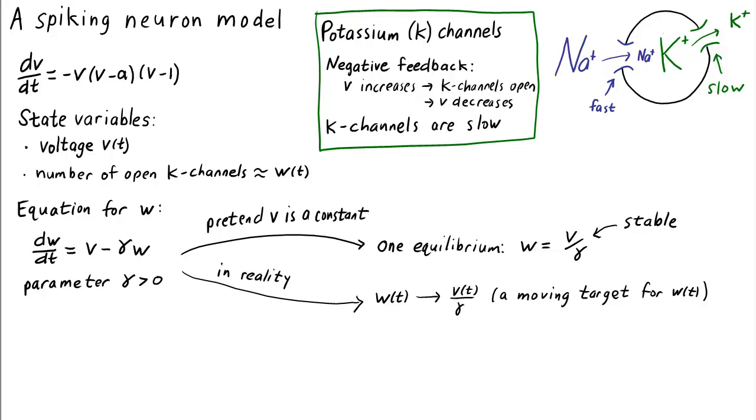Another property of the potassium channels is that they are slow. To make W slow, we need dW/dt to be small. How do we make it small? We can simply multiply the expression for dW/dt by a small number. If we call that small number epsilon, then we can write the equation for W as dW/dt equals epsilon times the quantity V minus gamma times W.